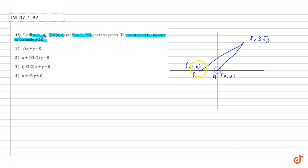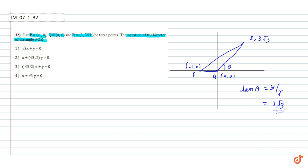Since point R is at (3, 3√3), if this angle is θ, then tan(θ) = y/x = 3√3/3 = √3. So the value of tan(θ) equals √3.